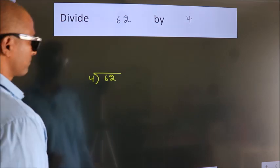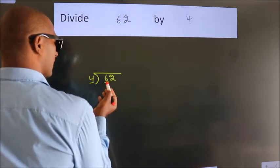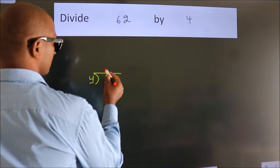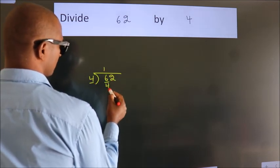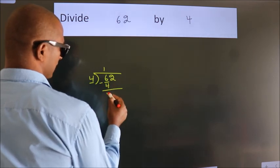Next. Here we have 6, here 4. A number close to 6 in 4 table is 4 once 4. Now, we should subtract. We get 2.